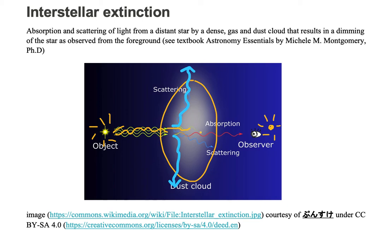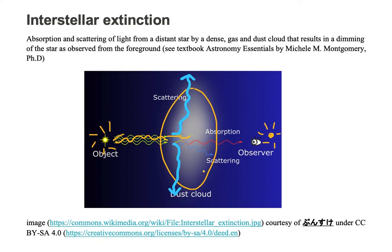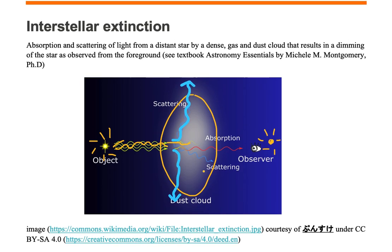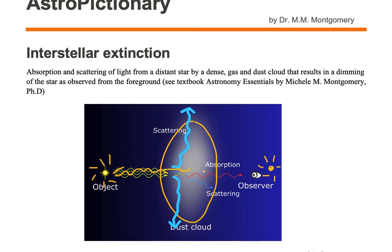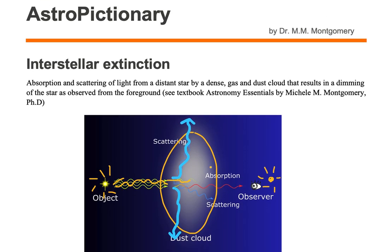So any light that passes through to the observer will be dimmer because of the absorbed and scattered light in this dense gas and dust cloud. We call this interstellar light extinction.